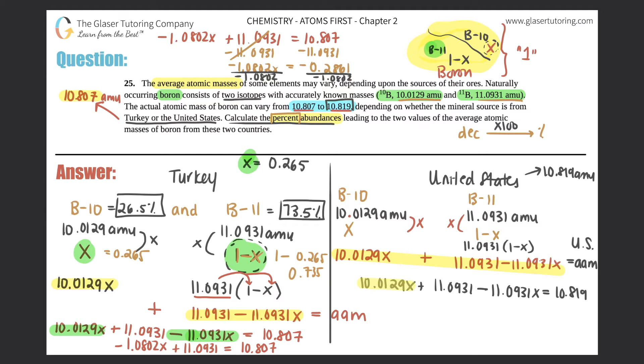So let's get down to it. 10.0129X plus 11.0931 minus 11.0931X equals 10.819. Clean up your X's. This is a similar variable with this. And remember to put in your negative. So when I do 10.0129 minus 11.0931, we should get the same answer as before, right? Negative 1.0802X plus 11.0931 equals 10.819. Subtract the 11. This is where your numbers are going to change from before. So you get negative 1.0802X equals 10.819 minus 11.0931. And you get negative 0.2741. Divide out the negative 1.0802. And I'm going to put the X up top here again.